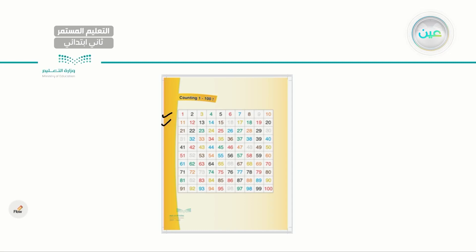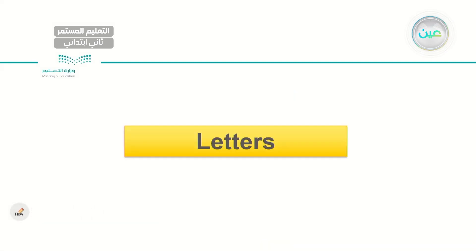Very good. Let's go to the next line: 11, 12, 13, 14, 15, 16, 17, 18, 19, 20. Very good. Now we will go vertically: 10, 20, 30, 40, 50, 60, 70, 80, 90, 100. Very good. We will be taking these also throughout this semester.